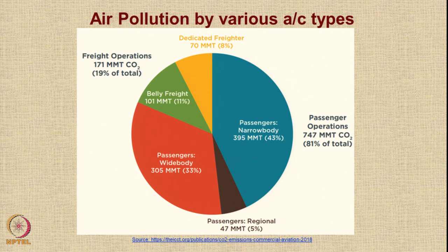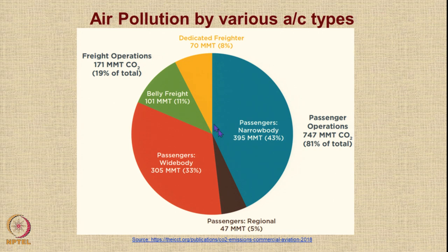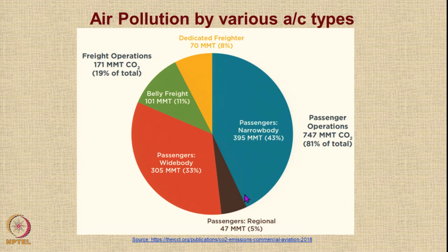Let us look at how much air pollution is created by various aircraft types. Belly freight contributes only about 11% and dedicated freighters about 8%, together accounting for around 19% of the total 171 million megatons of CO₂ emissions. But passenger operations — narrow body, wide body, and regional — account for much more, with the largest contribution from narrow body aircraft like the Boeing 737 or A320 at 43%. Wide body aircraft consume less fuel per capita due to longer distances traveled. Together, passenger operations account for about 81% of fuel consumption.